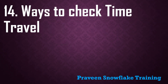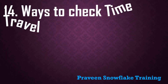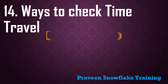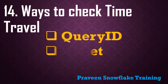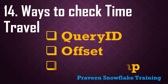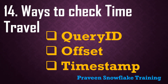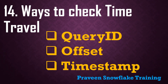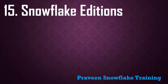What are the ways to check time travel in Snowflake? Time travel is used to access historical data. You can access historical data using query ID, using OFFSET, or using TIMESTAMP. These are the three ways to perform time travel.